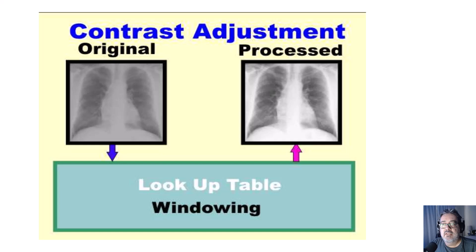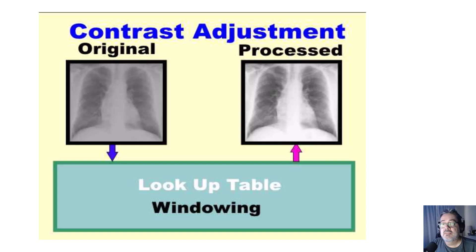Just looking at the original image on the left, the raw data produced by the x-ray beam doesn't look as polished as the post-processed image on the right. The lookup table for a PA chest used here is designed to accentuate lung markings.